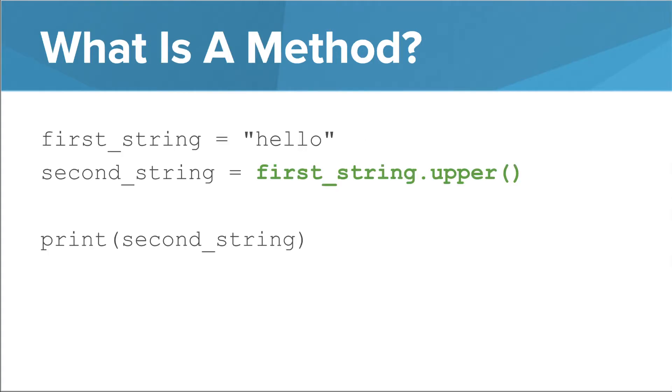Okay, now let's look at an example of this thing called a method. In this example, we see the piece of code that says first_string.upper. Upper is a method, and in this program we are calling it.